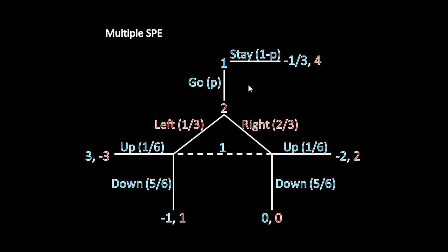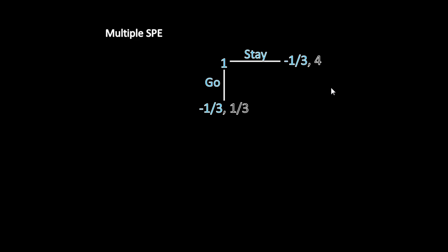Just to recap the important takeaway: what causes multiple subgame perfect equilibria is the presence of this indifference, where Player 1 is completely indifferent — exactly indifferent between staying and getting negative 1/3, and going and getting negative 1/3. If these were just slightly different payoffs — for example, if this were negative 0.33 instead of 1/3 — that would make go strictly better than stay, because −0.33 is greater than −1/3 (or −0.3333...). So it requires exact indifference to get multiple subgame perfect equilibria, and having exact indifference like this is really rare, which is why you will most of the time not encounter games with multiple subgame perfect equilibria.